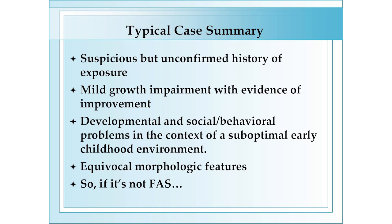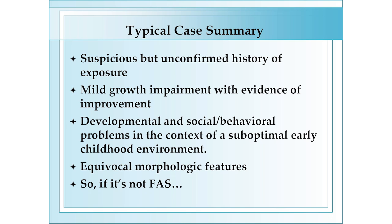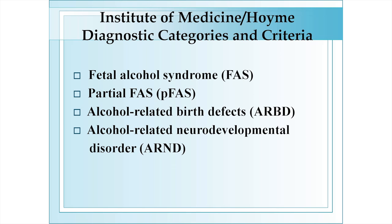Very often after the assessment, all of the historical and physical information available is vague or equivocal. It's helpful to have diagnostic alternatives besides fetal alcohol syndrome. The Institute of Medicine developed a diagnostic categorization system and set of criteria in the 1990s, modified in 2005 in an article by Eugene Hoyme and others. According to this system, the categories include fetal alcohol syndrome, partial fetal alcohol syndrome, alcohol-related birth defects, and alcohol-related neurodevelopmental disorder.